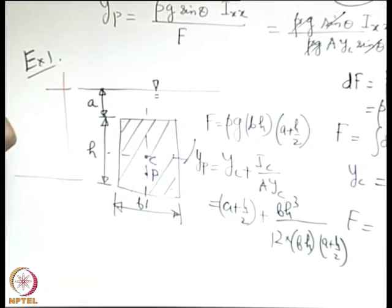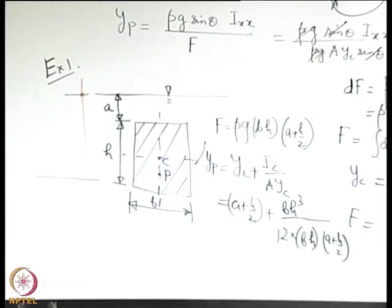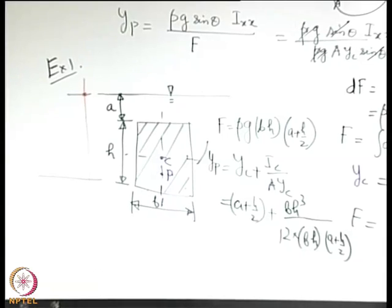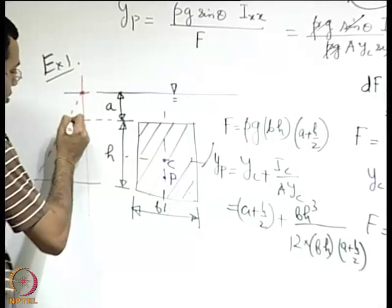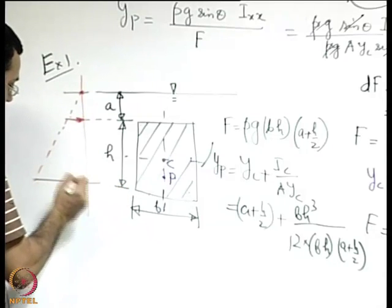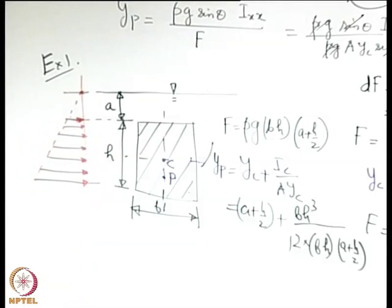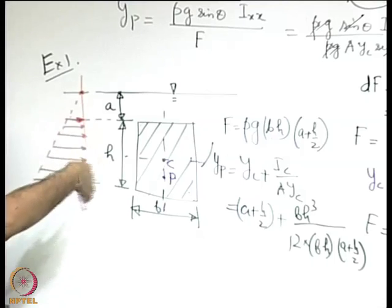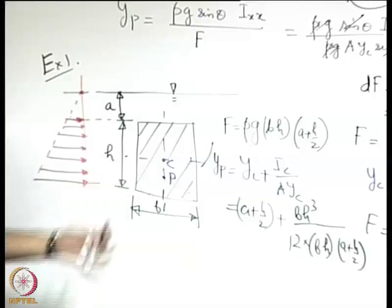To sketch the pressure distribution: the pressure is zero (gauge) at the free surface and increases linearly with depth. At the top of the surface the pressure has one value; at the bottom it is larger. It is a distributed force that varies linearly with height, and the area under this loading diagram gives the total force. These kinds of examples are similar to those in basic engineering mechanics.